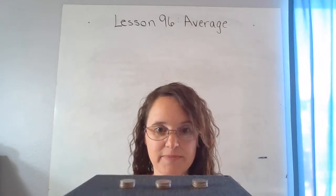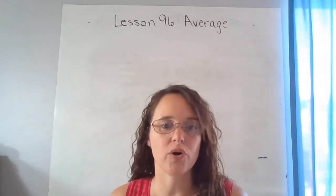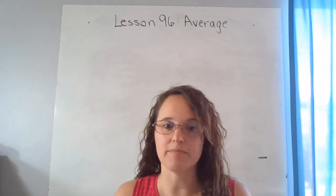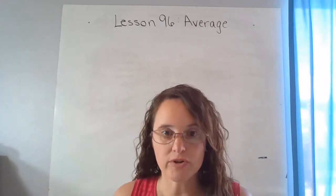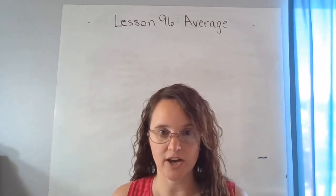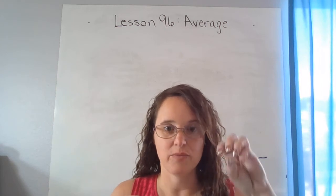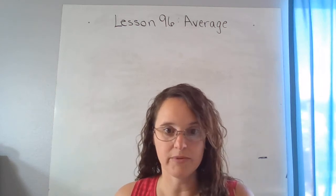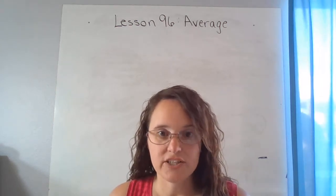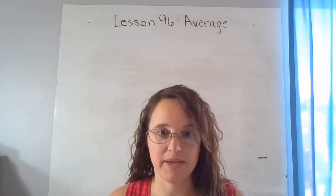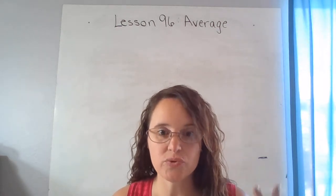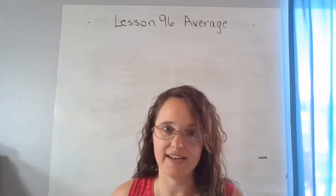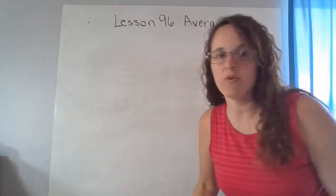Finding the average means we take the total amount we have, total amount of points, total amount of quarters, total amount of whatever it is we're talking about, and then we divide it into the number of groups so that each group has the same number. So there's a two-step process to doing that, and I'm going to show you with my quarter example.